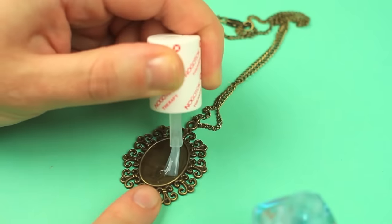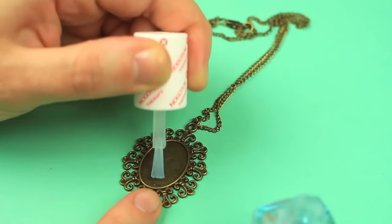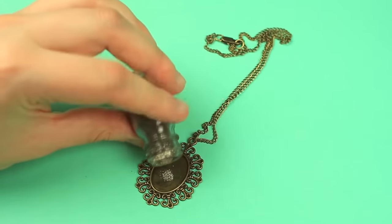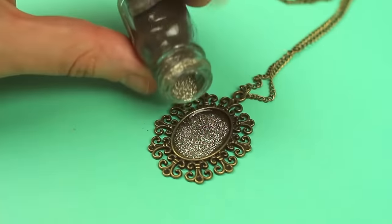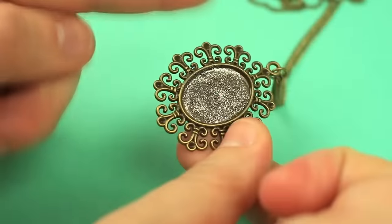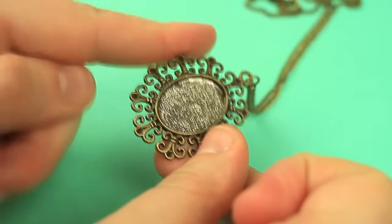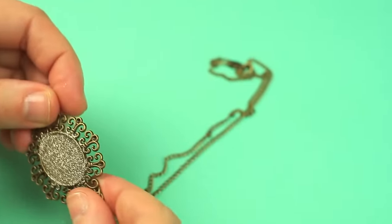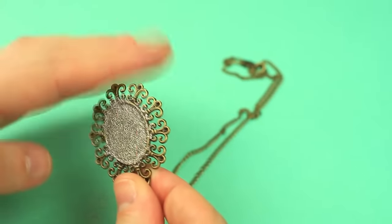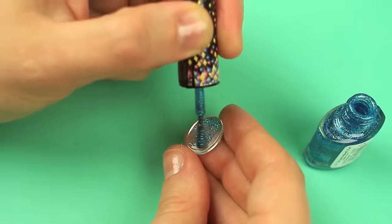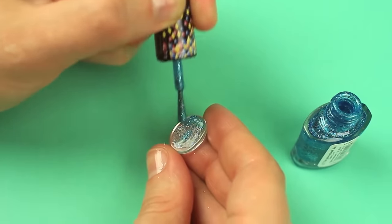Cover the cabochon setting with a transparent nail polish. Pour glitter onto the tray before the polish is dry. Spread the glitter all over the surface by tapping against the pendant frame. Cover the underside of the glass cabochon with the glitter nail polish. Thus, we'll create a magic glow effect.